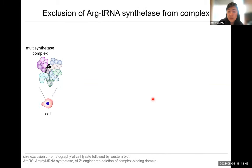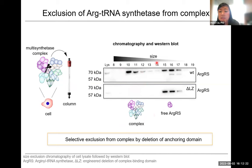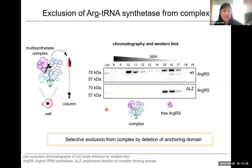To show that we are actually losing ArgRS from the multisynthetase complex, we used size exclusion chromatography to fractionate ArgRS depending on its molecular weight. If it's in a large complex, it elutes at earlier fractions, while the free synthetase comes at later fractions. In wild-type cells, a certain amount of ArgRS always elutes at later fractions. However, if we delete the leucine zipper, we get only the free ArgRS — we lose its integration into the multisynthetase complex.